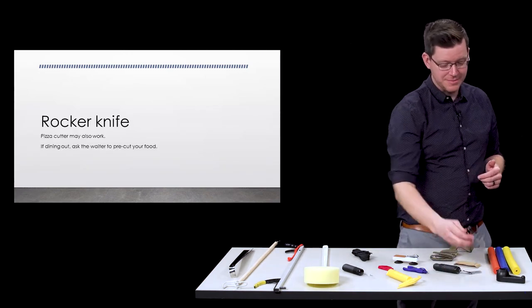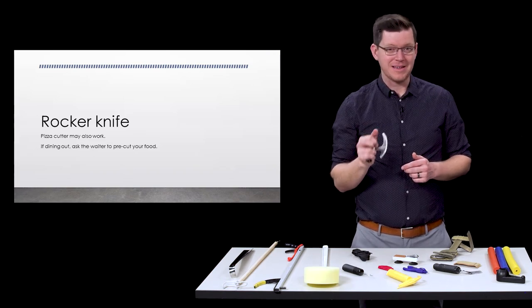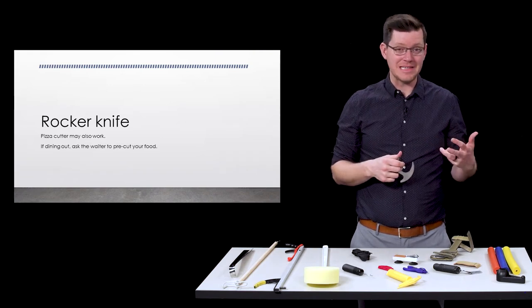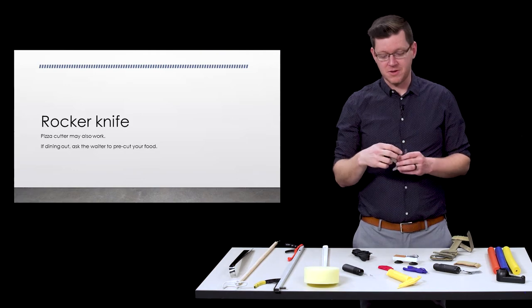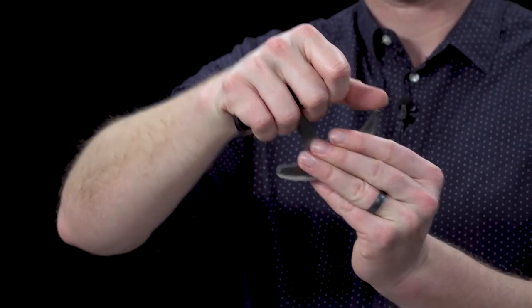One of my favorite eating adaptations is the rocker knife. The one thing I like about it is that it's super simple, it's not something that's going to take a lot of space if you're going out to eat, and you can use it with very little grip strength.